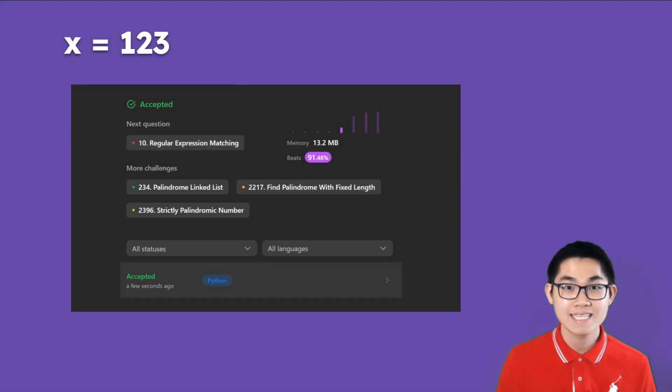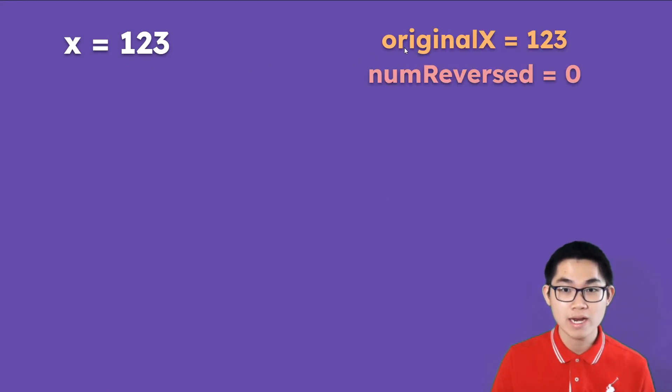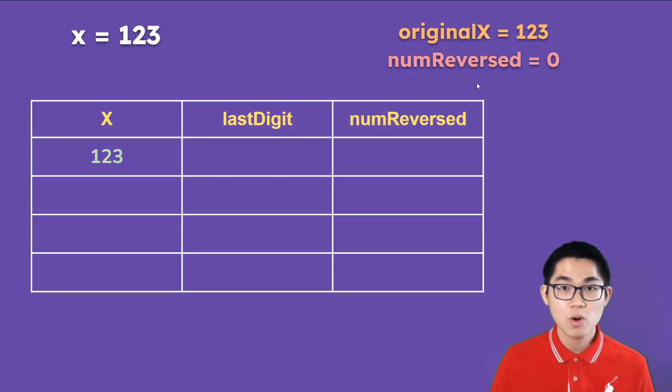Let's take a look at the second solution. So let's say x is 123. We're going to create two variables. One is original x and it's just the same number. The other one is num reverse, and you'll see why we do this in a second. We're also going to create a table and fill this table up.